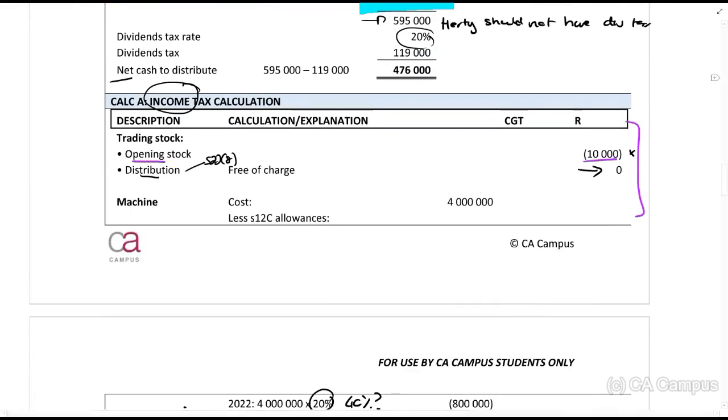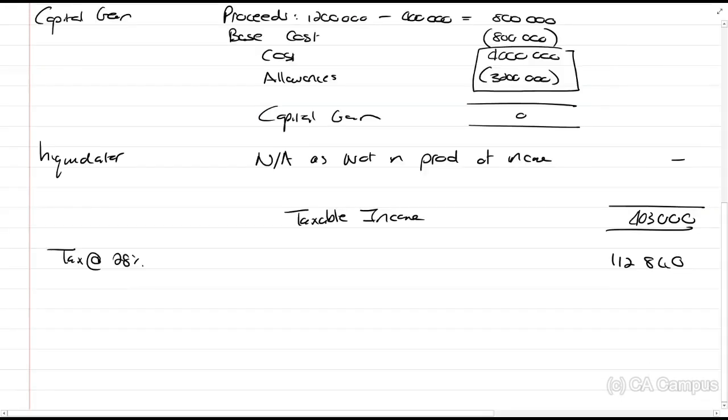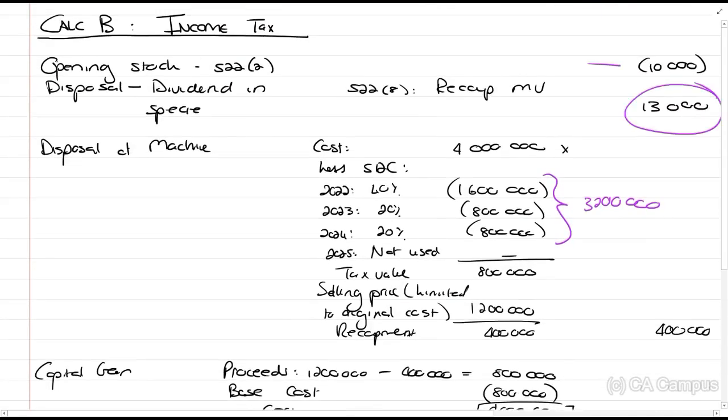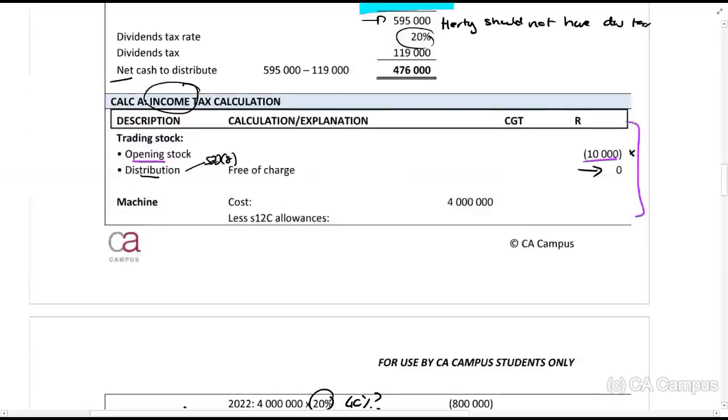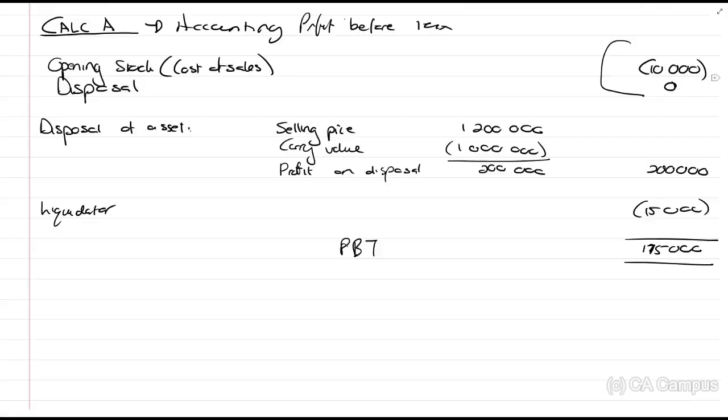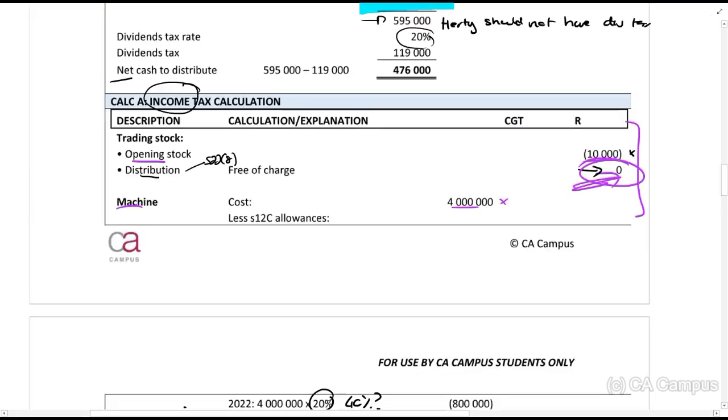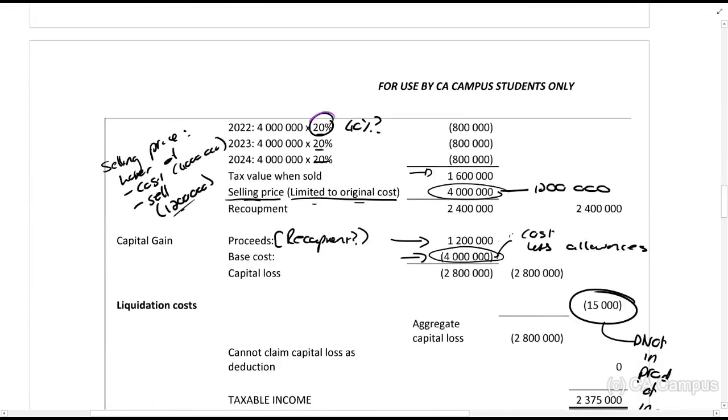So, the first thing is the opening stock of 10,000. We've deducted that as well. We're happy. They said the 13,000 that we've recouped under section 22.8 but they made it zero so that's the first mistake. Cost, then they calculate the machine cost of 4 million which is what we do and then we calculate the allowances of 40, 20, 20, 20 because it's a new machine. They calculate it as 20, 20, 20. So, this first one there is incorrect.